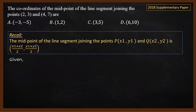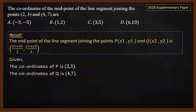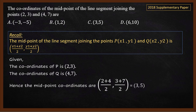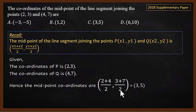Substituting the values into the formula: midpoint x = (2+4)/2 = 6/2 = 3; midpoint y = (3+7)/2 = 10/2 = 5. So the midpoint is (3, 5), which means answer C is correct.